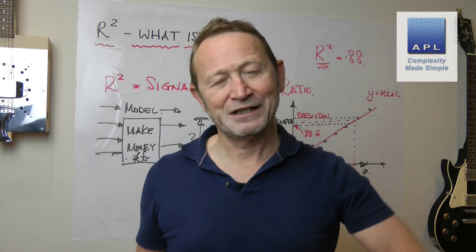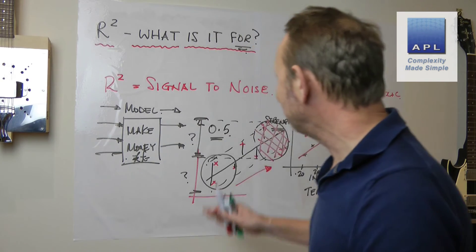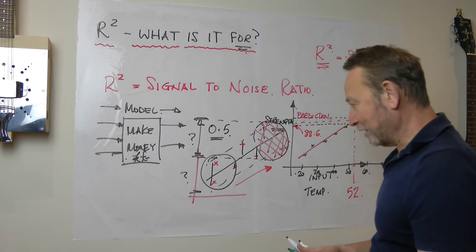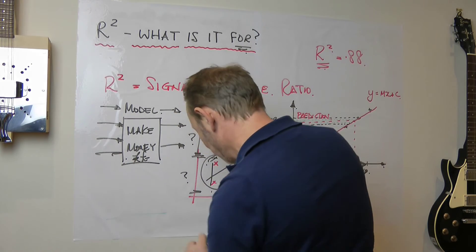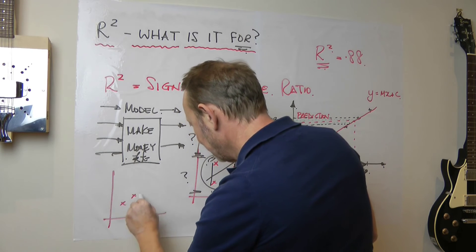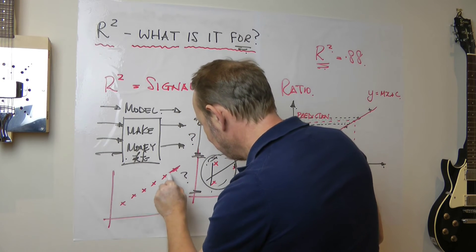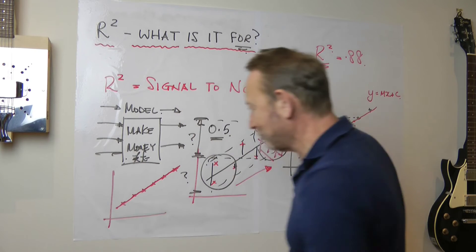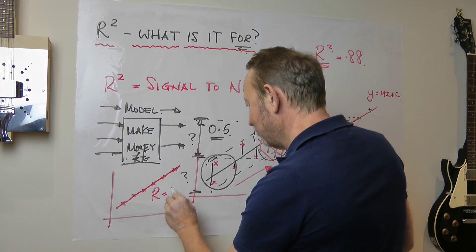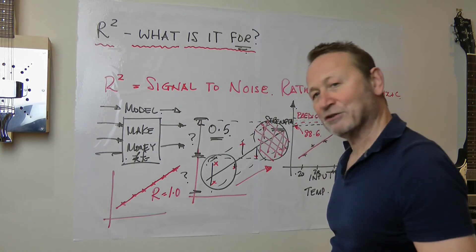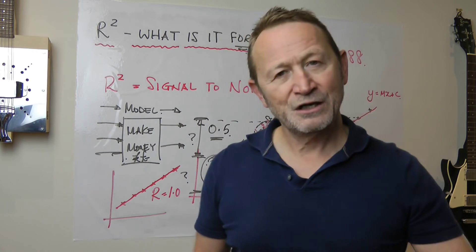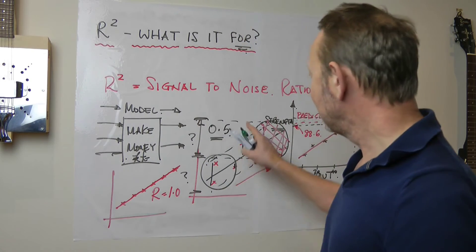So R-squared is a mathematical number, it's a signal to noise ratio. And obviously if you had an R-squared of one, what would that mean? It would mean that all the data falls exactly on the line. In other words, everything you did was signal and there was no noise. That doesn't happen.